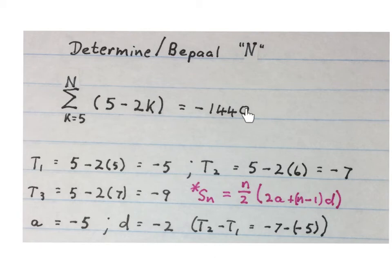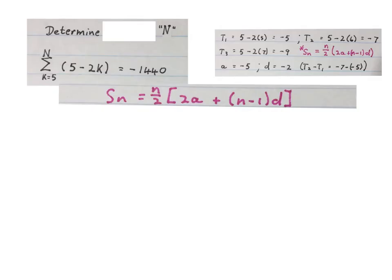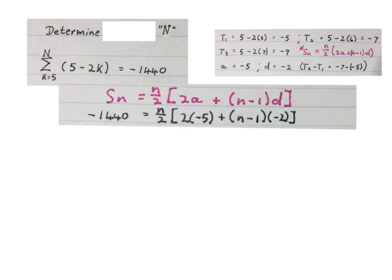They gave me the sum of this series. I know it's arithmetic, so I will use this sum formula. We now want to work out what the number of terms in this series is. We fill in the sum of the terms that we have on this side, fill in term 1 here and the difference over there.